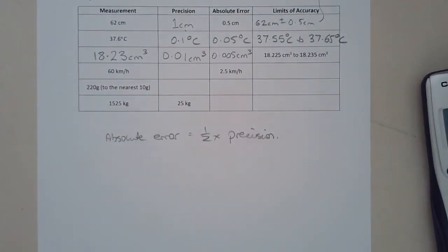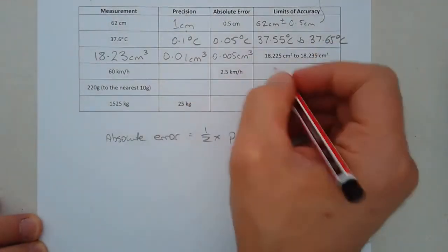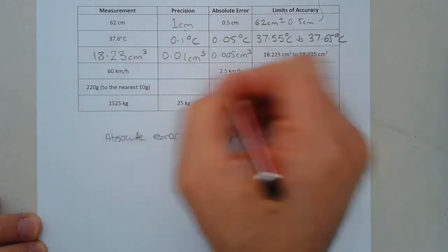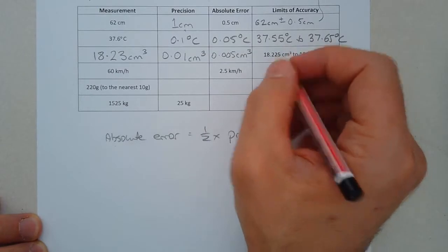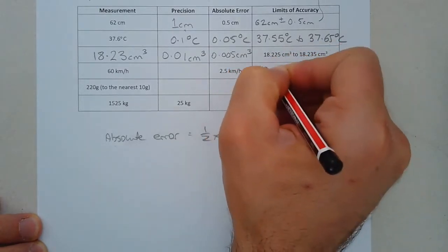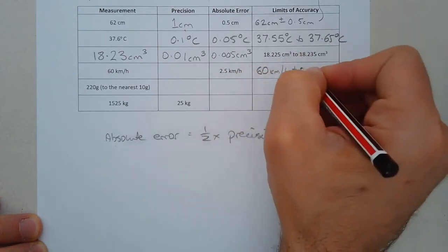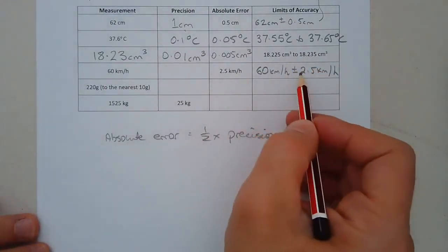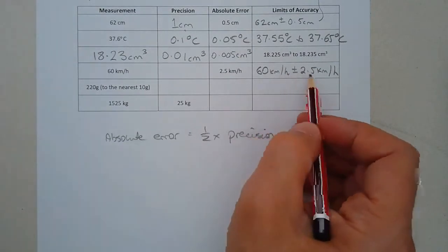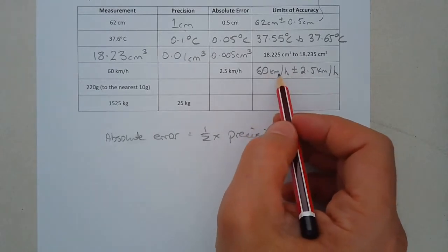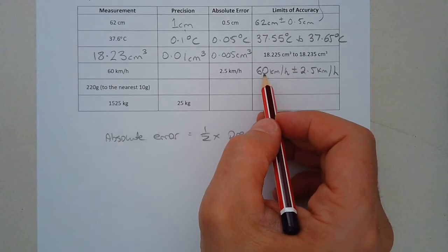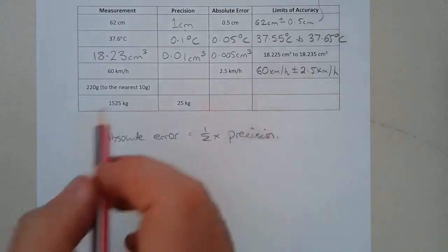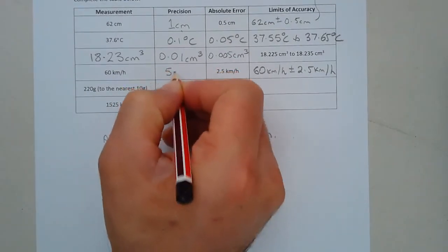What about the next row? A measurement there is shown at 60 kilometers per hour, and we're given that the absolute error is 2.5 kilometers per hour. The limit of accuracy, we could actually do that first. In fact, we could work out both equally as easily as each other. So I'm going to quote the limit of accuracy as 60 kilometers per hour plus or minus 2.5 per hour. You can either quote it in this form. That means give or take. We can either less 2.5 or increased by 2.5. So up to 62.5 kilometers an hour or down to 57.5. The precision is double the absolute error. So that would be 5 kilometers per hour.